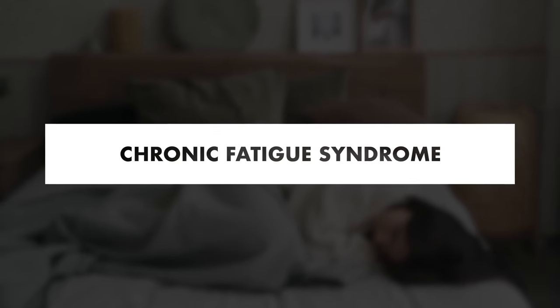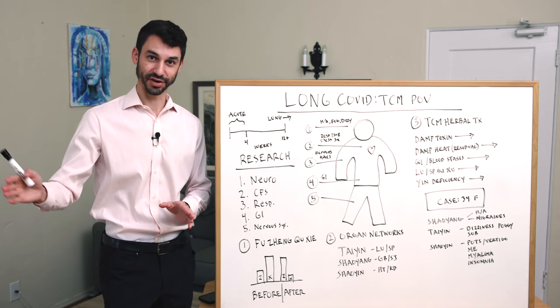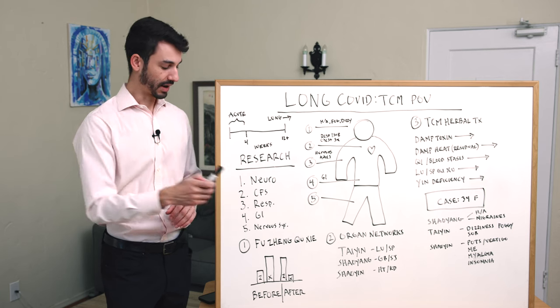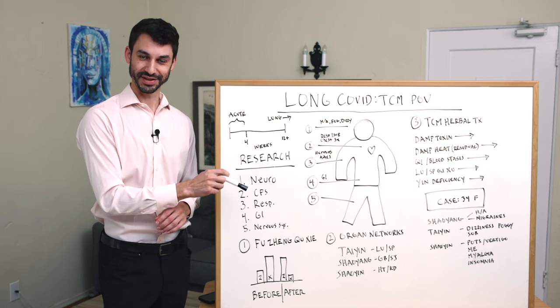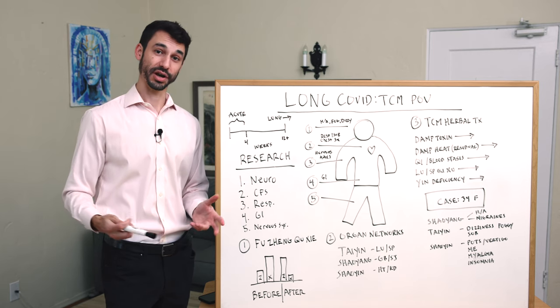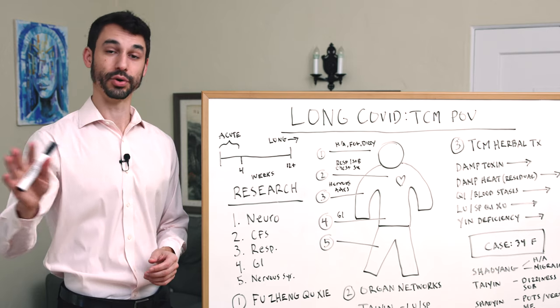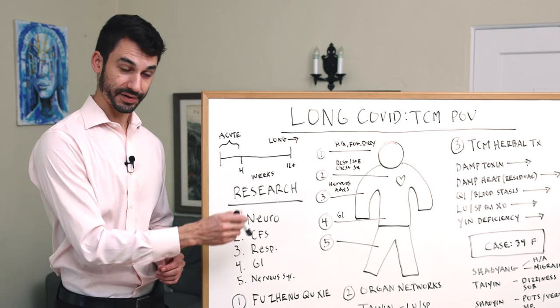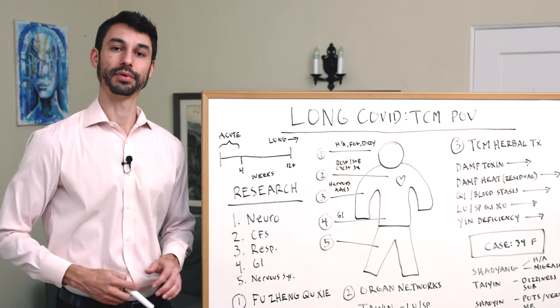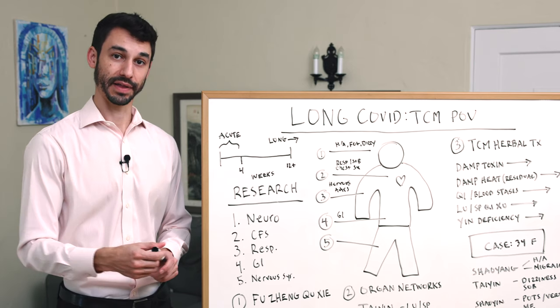We talk about chronic fatigue syndrome. Chronic fatigue syndrome is now a documented post-viral stage of illness for some viruses. Initially, these patients were considered to be hypochondriacs or to have depression or anxiety. They were given antidepressants and told it was all in their head. Long COVID is another example of a post-viral stage of illness that can lead to chronic fatigue syndrome.